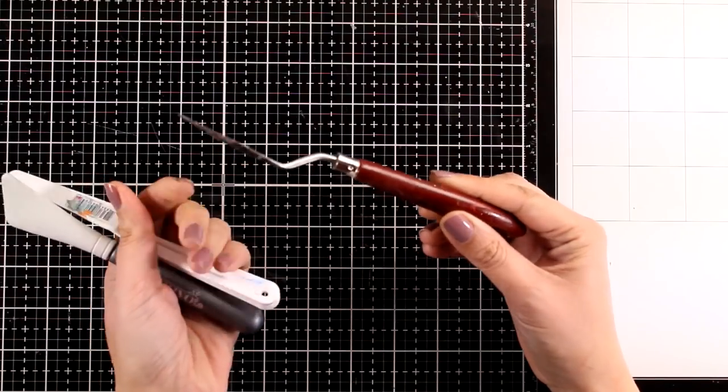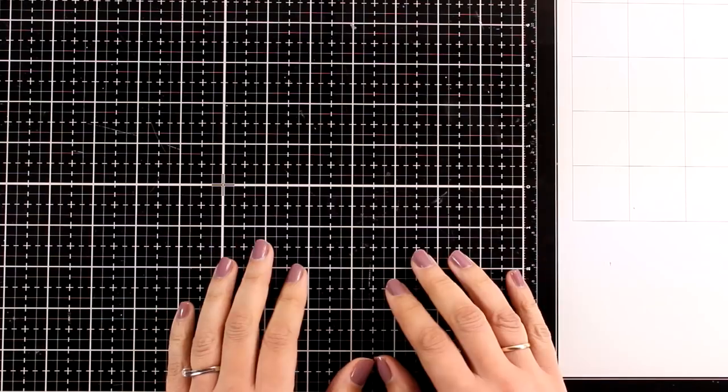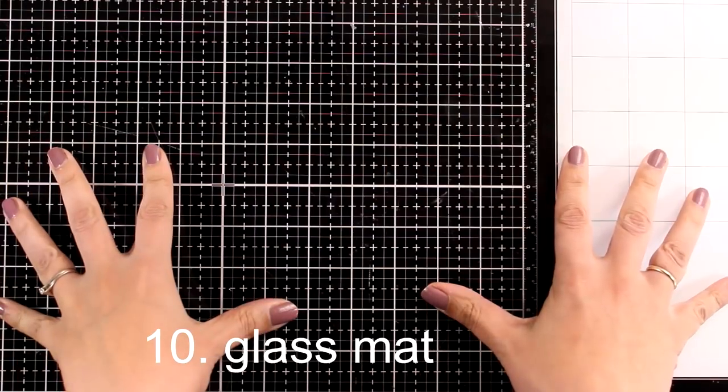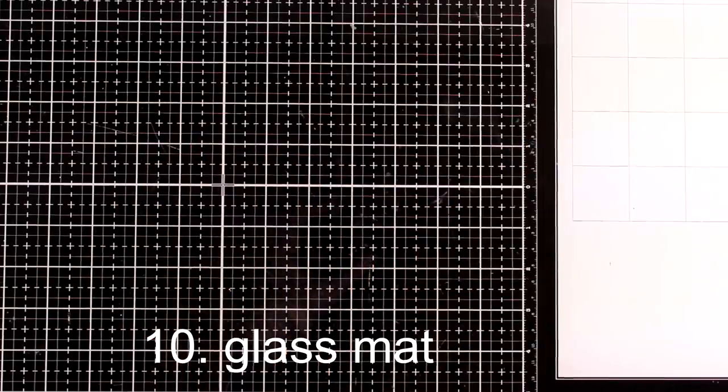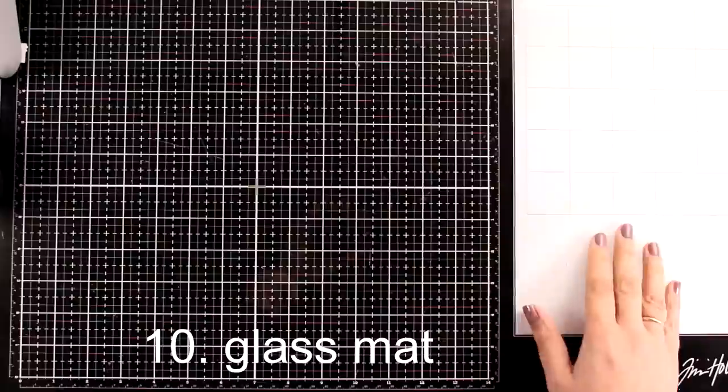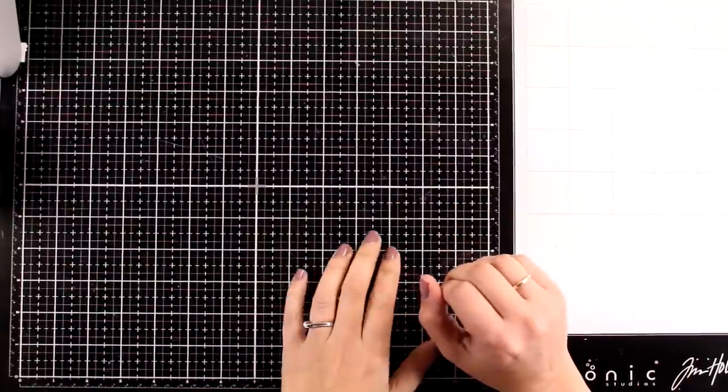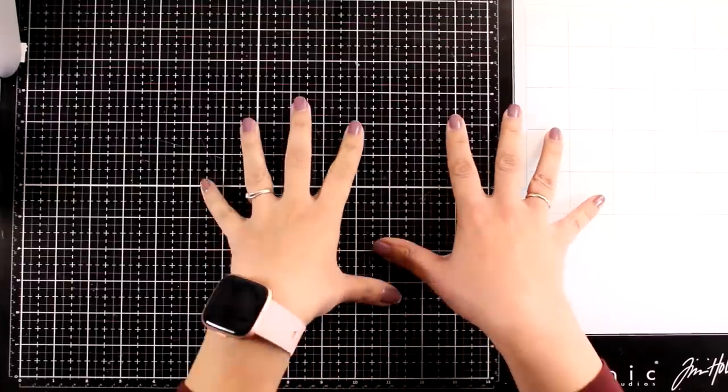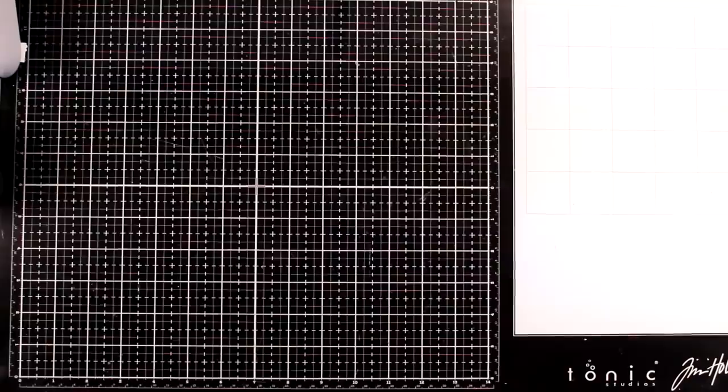Oh, and another tool that you may want to include is a brayer. However, I don't use it as often. This is why I didn't include it in my 10 favorite things. And of course, you need to work on something. My absolute favorite is the glass mat by Tim Holtz. You see me working on top of that all the time. I bought it a few years ago and never looked back. There are many advantages to working on a glass mat, but the number one is that it is super easy to clean.